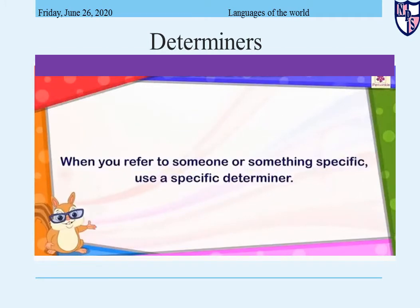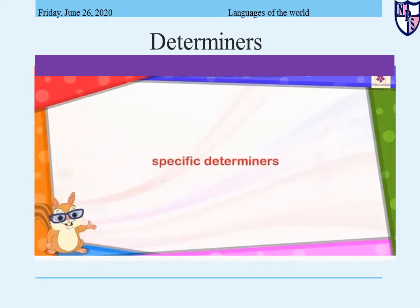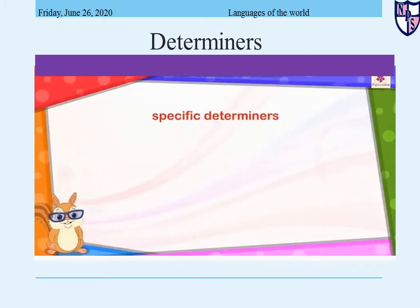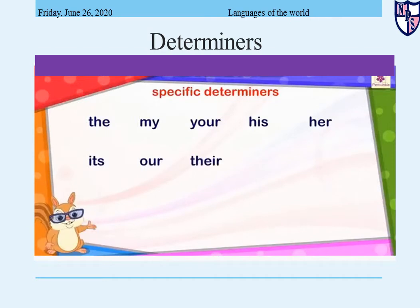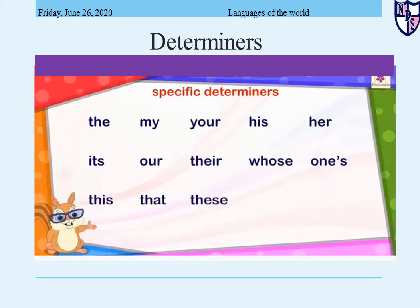When you refer to someone or something specific, use a specific determiner. Some specific determiners are: the, my, your, his, her, its, our, their, whose, one's, this, that, these, those, and which.